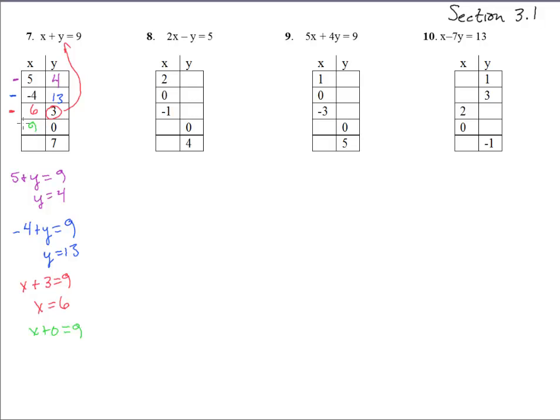And then the very next one, let's do 7 in for y. So we get x plus 7 equals 9. That gives us x equals a 2, so we have 2, 7. So yeah, 5 plus 4 equals 9, negative 4 plus 13 equals 9, 6 plus 3 equals 9, 9 plus 0, and 2 plus 7. Good.